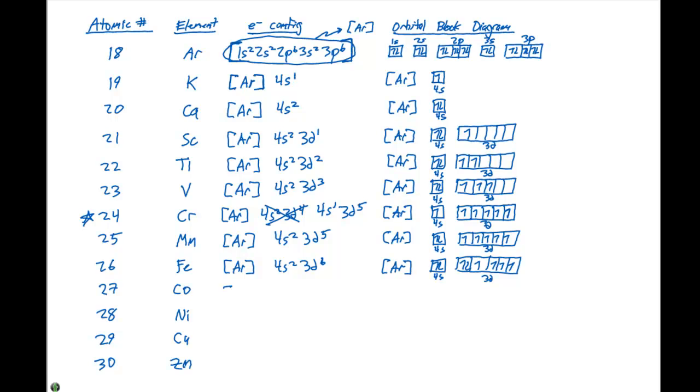For cobalt, we have our argon noble gas core, then 4s2, 3d7. That's gonna give a block diagram with both electrons in the 4s. And then, we need to put seven electrons in the 3d. So, two of those electrons would be spin paired and three of them would be unpaired.